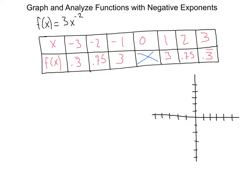Let's go ahead and plot our points like always. So we have negative 3.3, that's going to be really close right here. We've got negative 2.75, we've got negative 1.3, and we're going to get this shape here that looks like this.